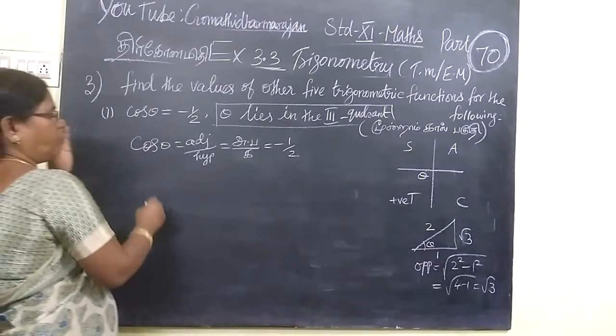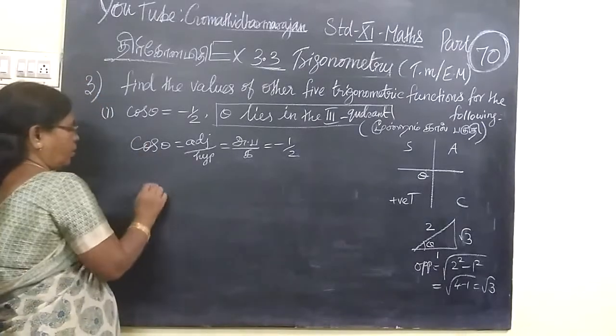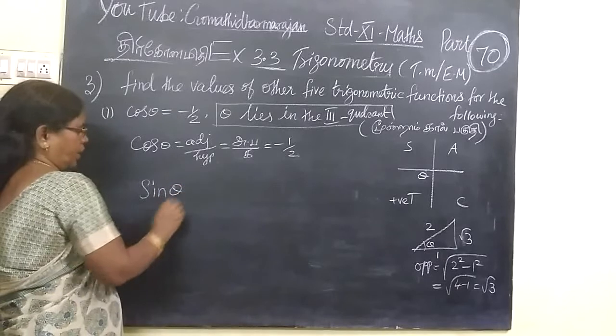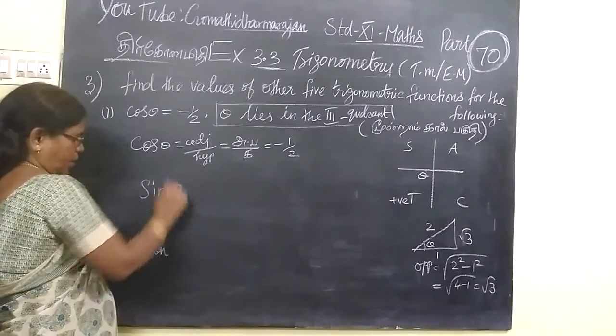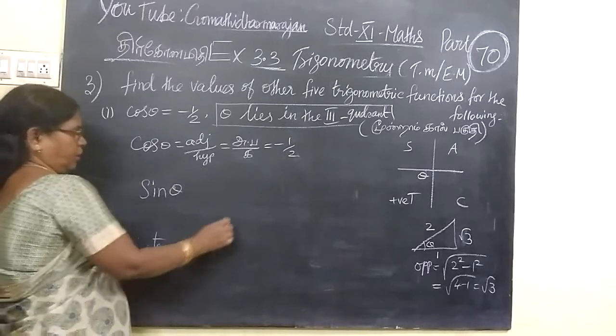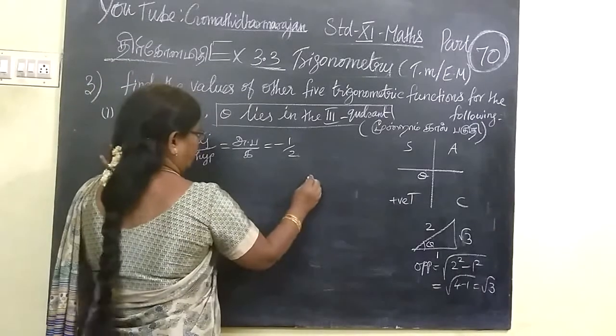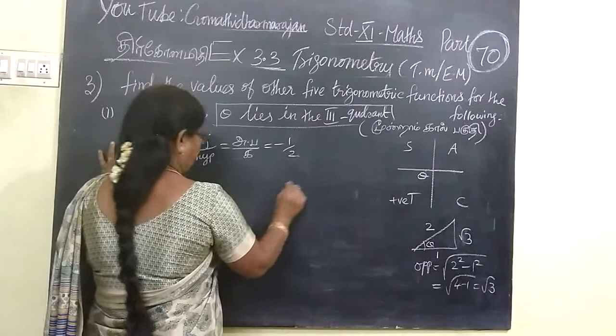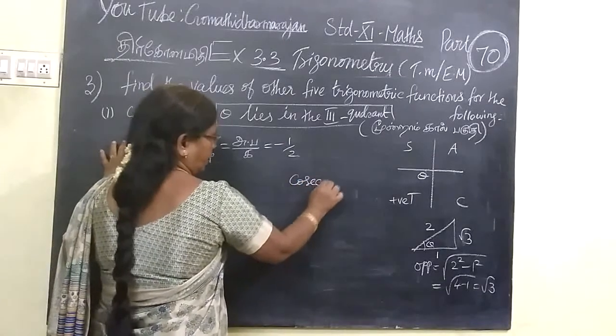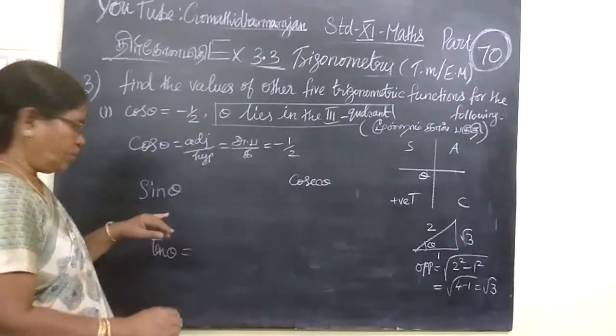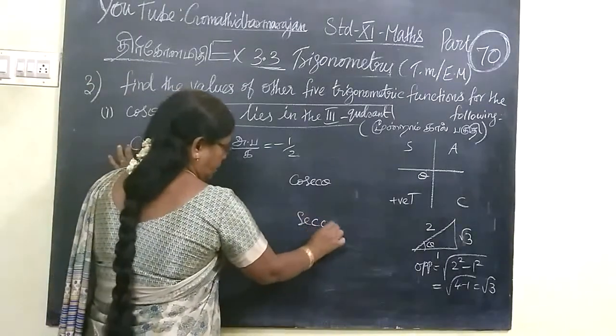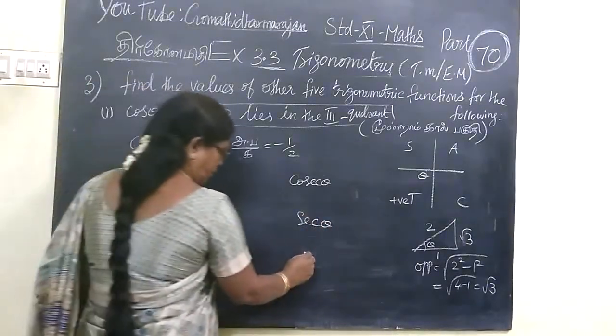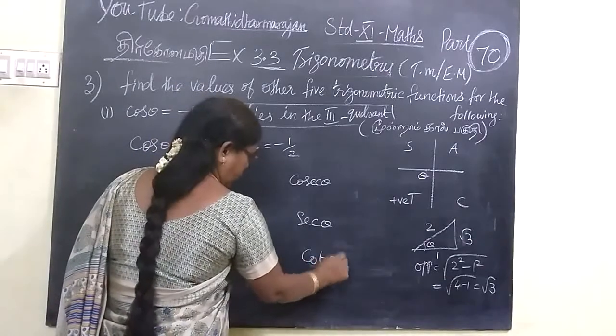Now we go on to find other values. Sec theta and we have sin, then tan. Sec is equal to the reciprocal, cos is the reciprocal. So this is the value.